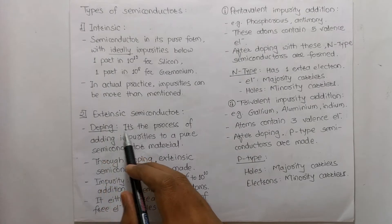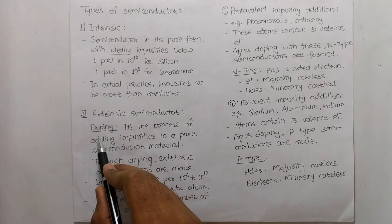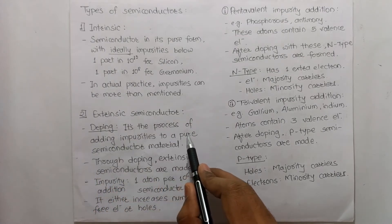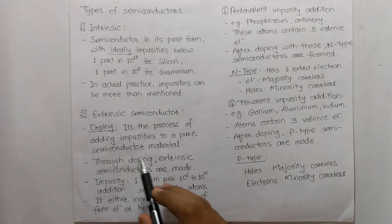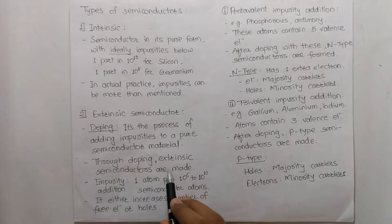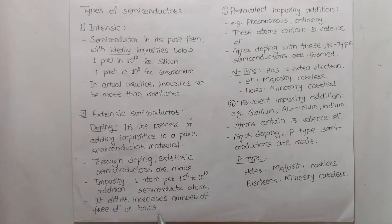Another useful type is the extrinsic semiconductor, which is made through the process of doping. Doping is the addition of impurities to a pure semiconductor material. Through doping, extrinsic semiconductors are made, with impurity addition of 1 atom per 10 raised to 6 to 10 raised to 10 semiconductor atoms. This either increases the number of free electrons or the number of free holes.